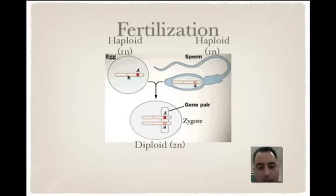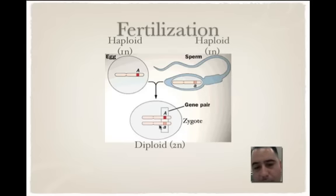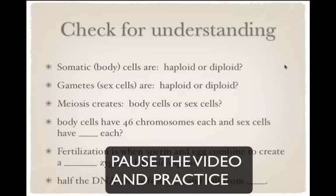An egg carries a chromosome and the sperm carries another chromosome, and they're haploid — one of each. But when they come together, you have two of that kind, so two of each — that's diploid.